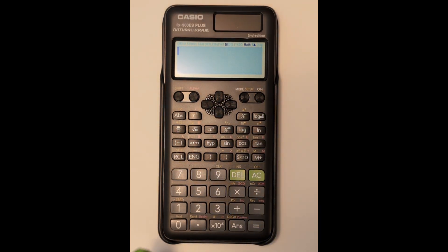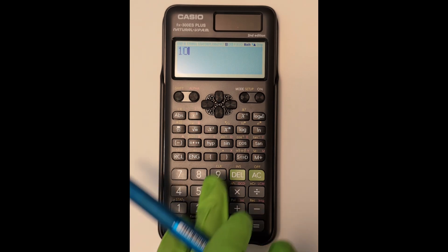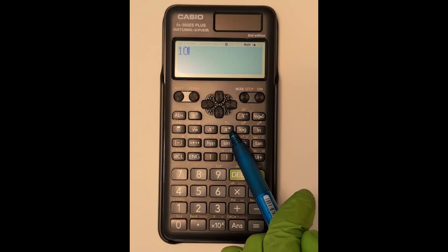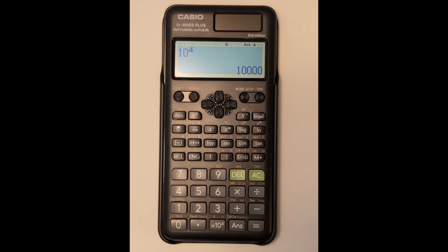Next we are going to look at the exponent button. This button allows you to add an exponent to any number. For instance, you can get the standard form of 10 to the fourth by entering 10, exponent button 4, and enter. The readout will give you 10,000.